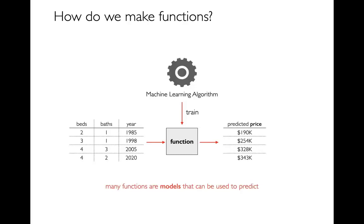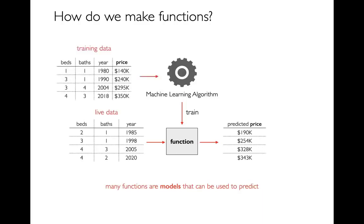The idea of machine learning is that instead of having a human write these functions, we're going to have a computer automatically generate them. The way they do that is by learning from examples. We feed in training data — a bunch of different houses that have sold for different amounts with different bedrooms and baths — and try to infer things like how much is a bedroom worth, how much is a bath worth, how useful is it to have a newer house. Then we use that function to make predictions on other data, which is useful for property assessments or pricing a house.